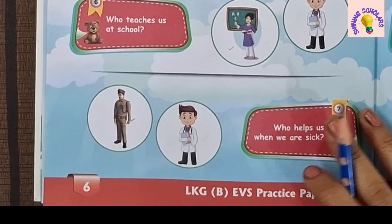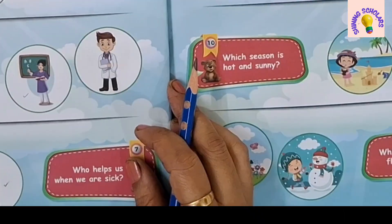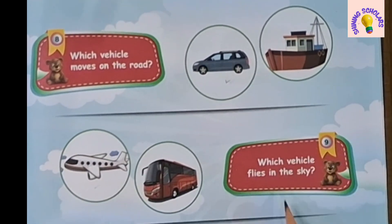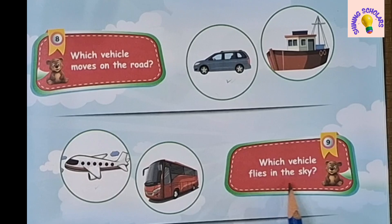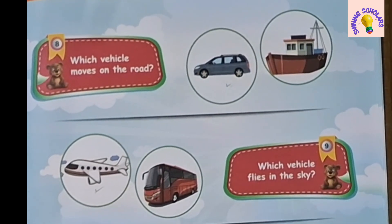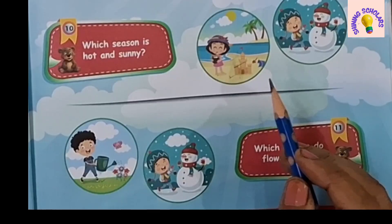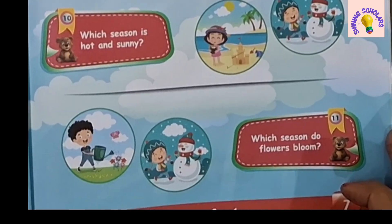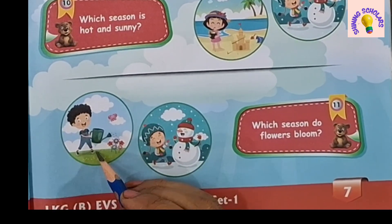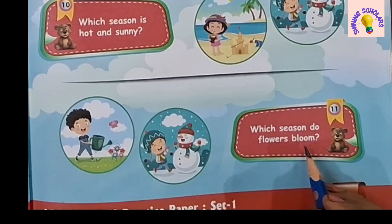Who helps us when we are sick? Doctor helps us when we are sick. Which vehicle moves on the road? Car moves on the road. Which vehicle flies in the sky? Aeroplane flies in the sky. Which season is hot and sunny? Summer season is hot and sunny. Which season do flowers bloom? Spring season, where the flowers bloom.